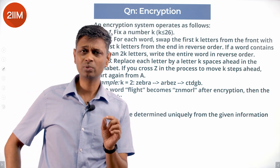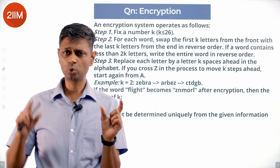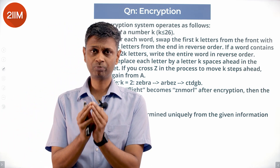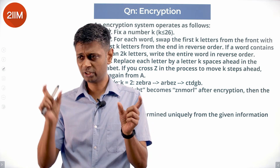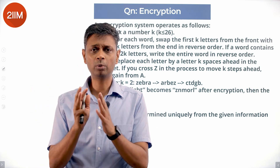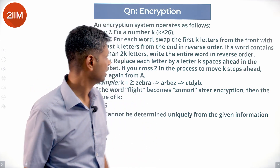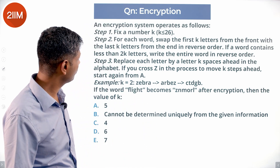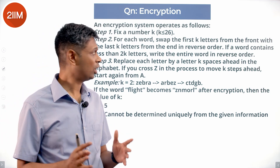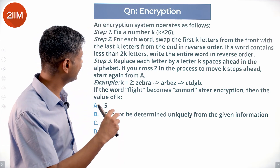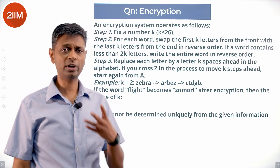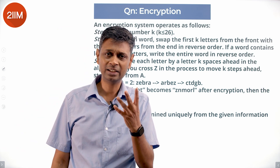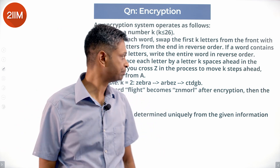For example, if k is 2, swap out the first 2 letters with the last 2; the middle will remain the same. If k is 3, swap the first 3 and last 3; the middle remains the same. If k were 3 and the word had fewer than 2k letters — like a 4-letter word — you just reverse it completely.